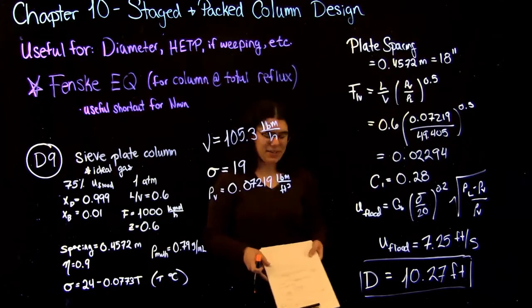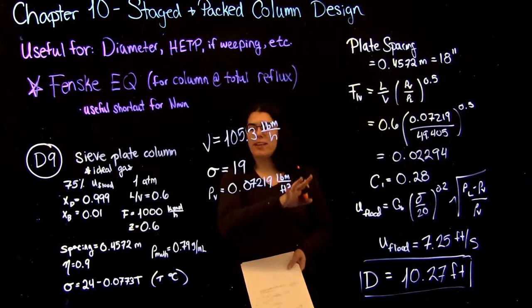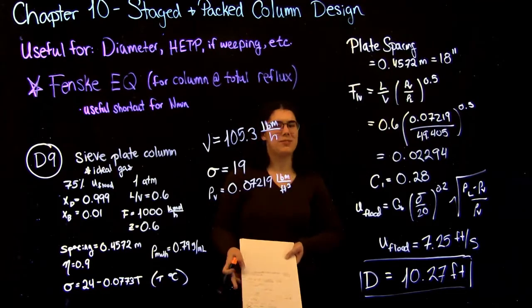So again, the most important takeaways are to be able to know what correlations you have to use from the textbooks and to also be sure that everything is imperial units so that you're able to use those correlations.